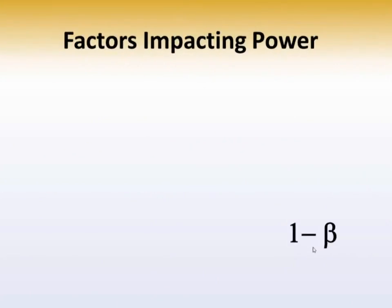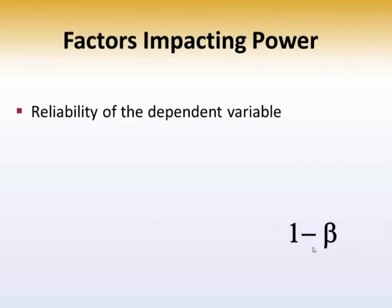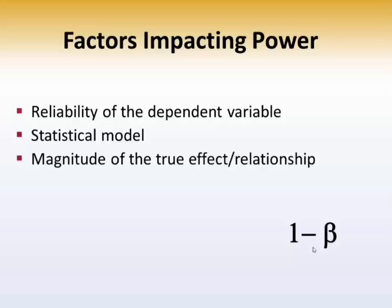Let's talk about the factors that impact power. The reliability of the dependent variable: the more reliable the dependent variable is, the less likely you are to make a type 2 error. The statistical model: selecting the correct statistical model will increase your chances of finding a difference if one exists, thus increasing your power. The magnitude of the true effect or relationship: if there really is a difference and it's large, you're more likely to find that difference. Error variance: as error variance decreases, power increases.